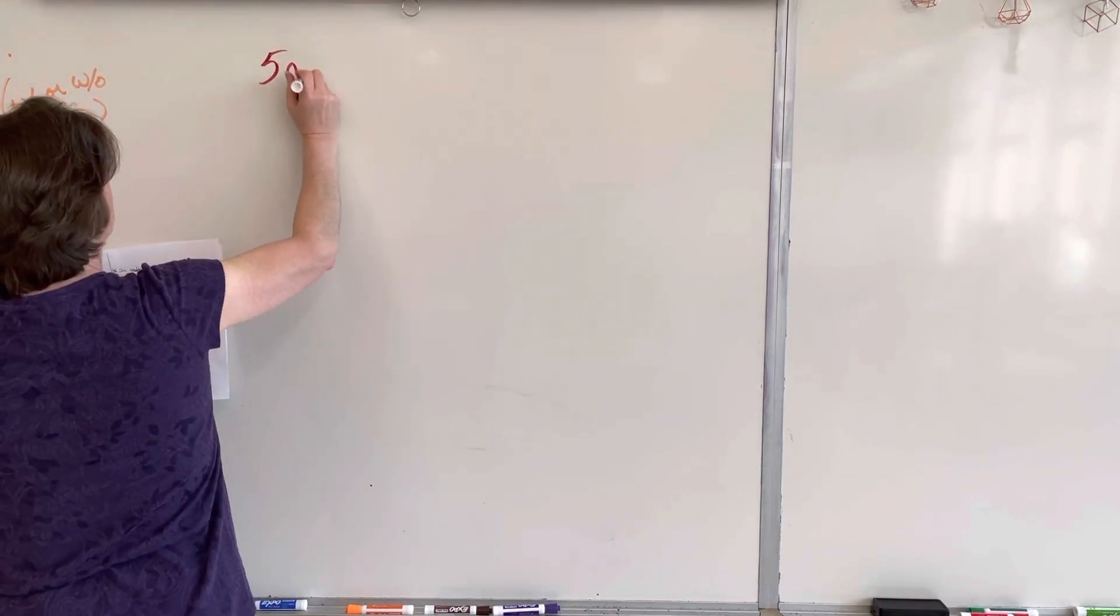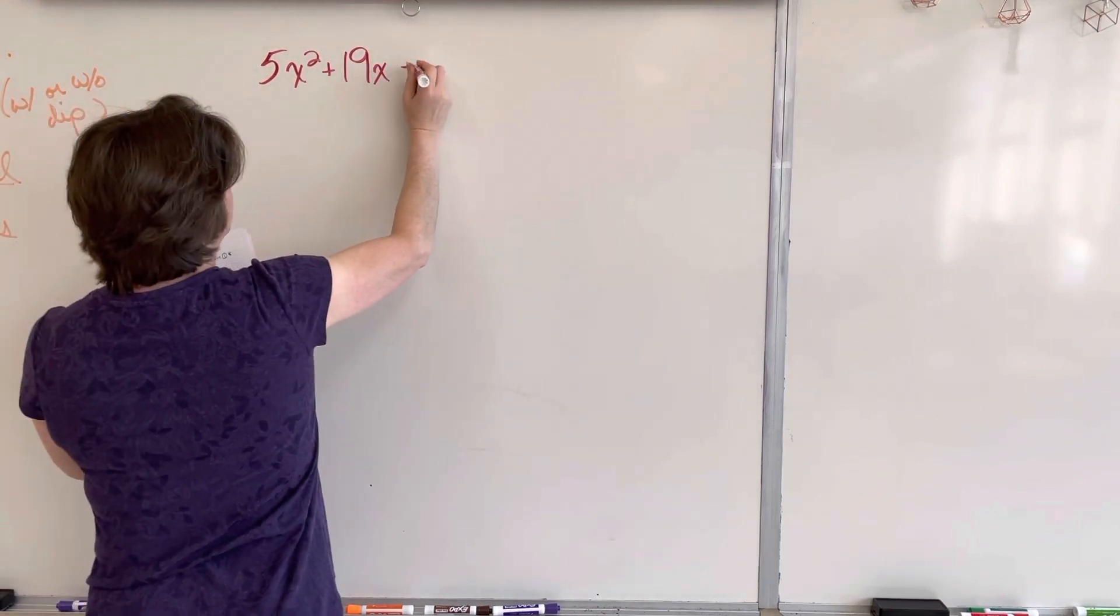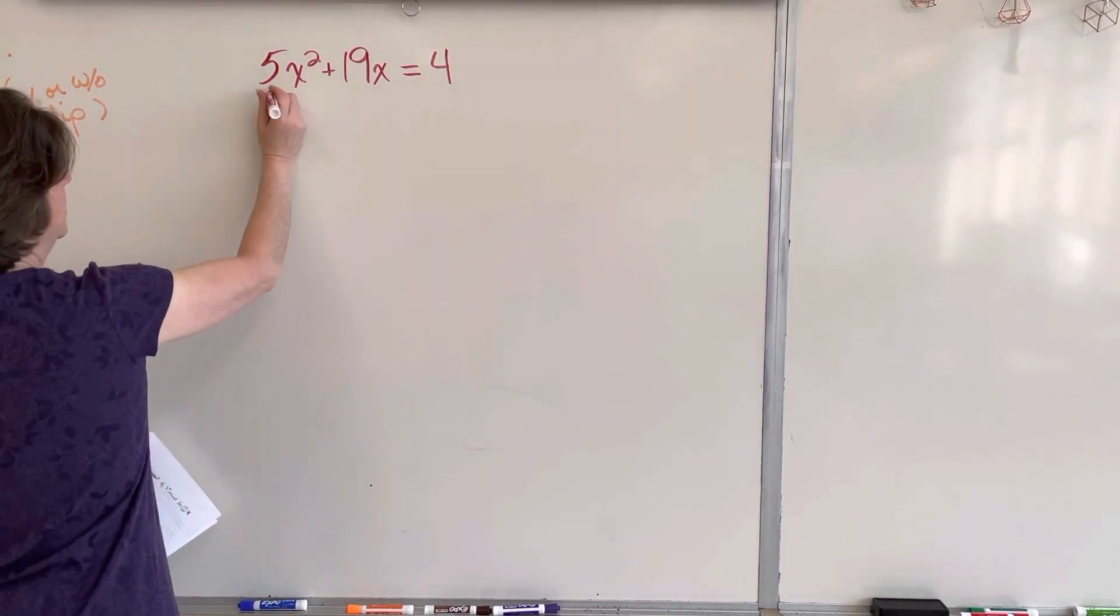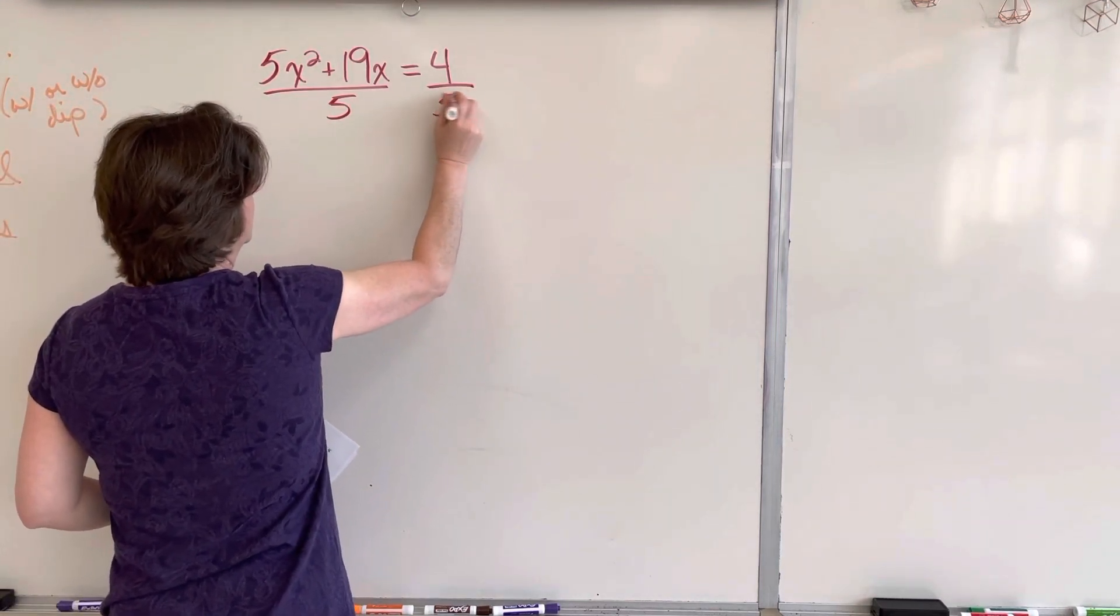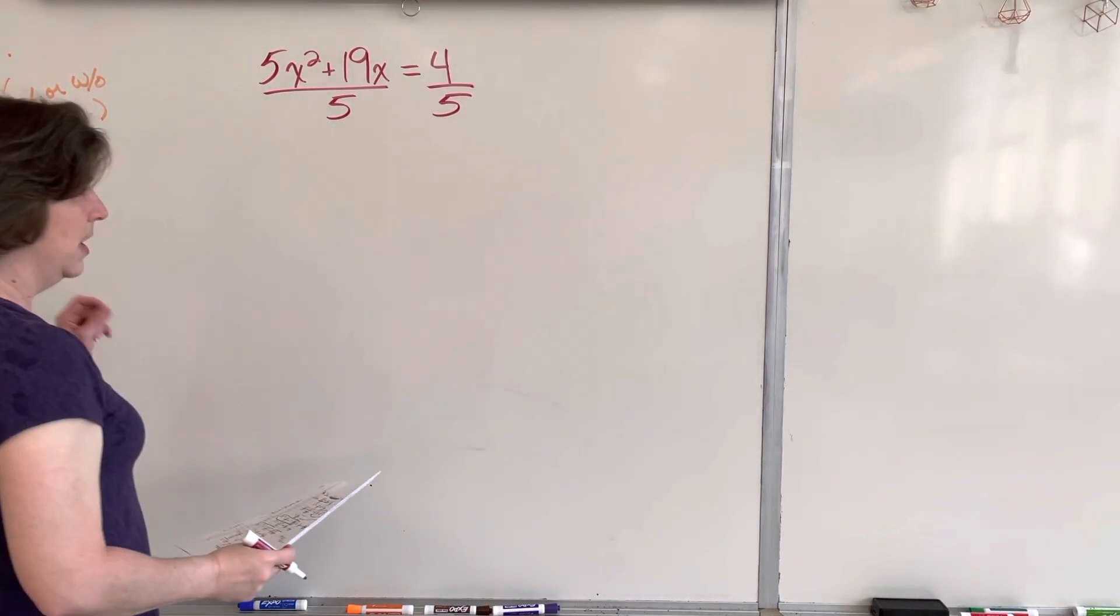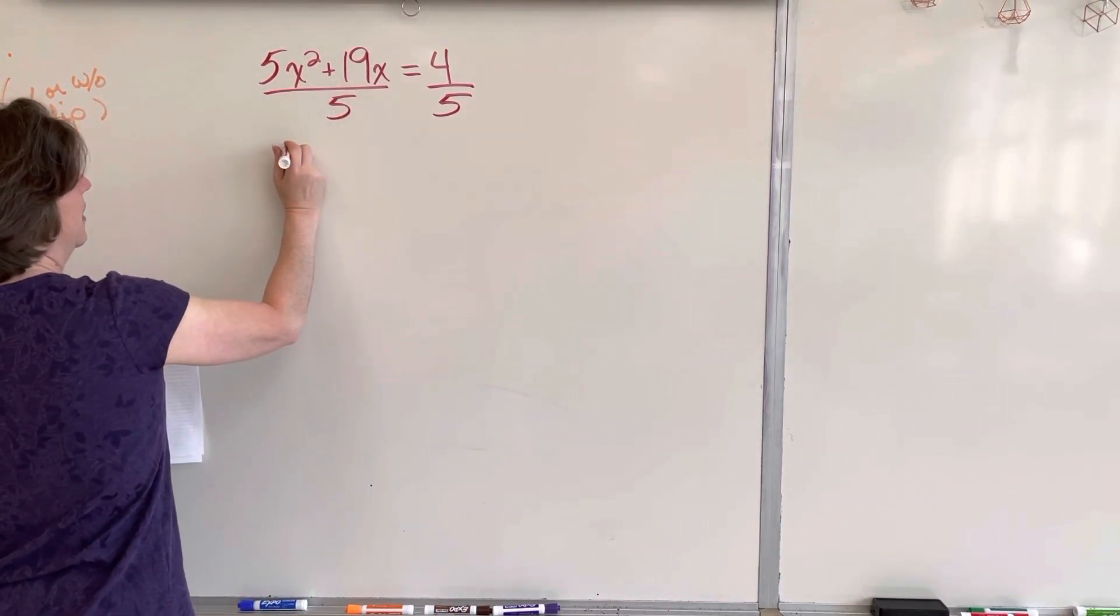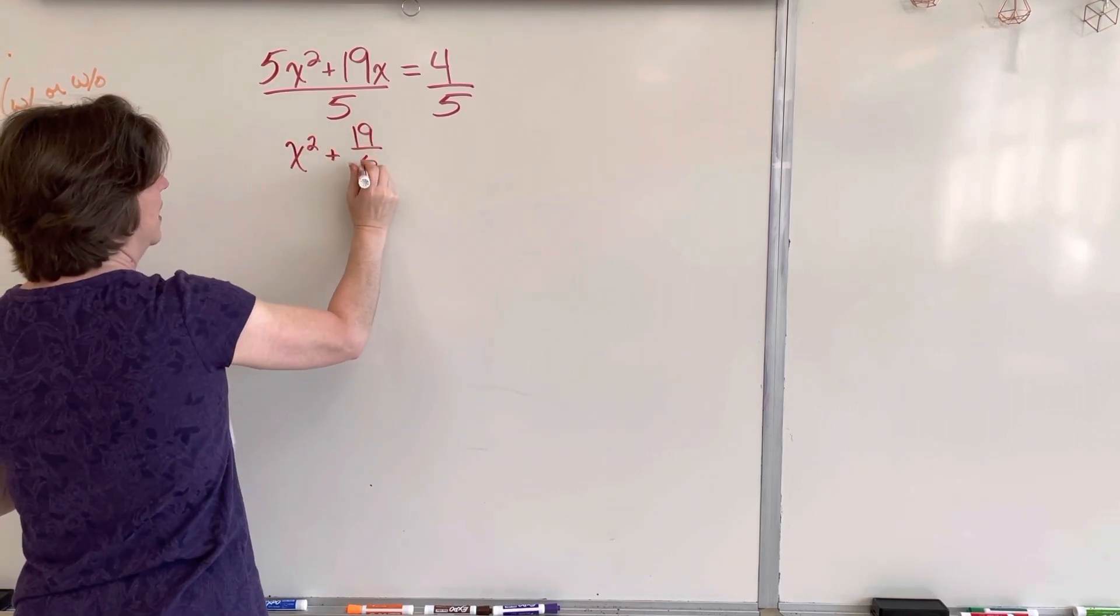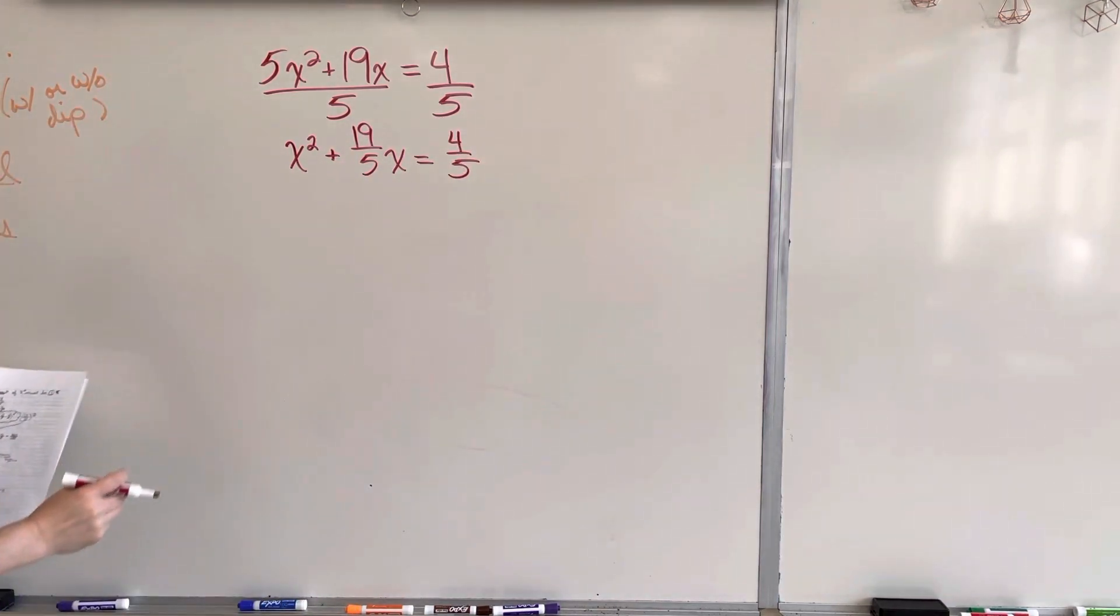5x squared plus 19x equals 4. It's already got the c on the right-hand side, so that's good. But we've got this 5, and we don't want a 5. We want a 1. So I have to divide that by 5. Remember, in algebra, we use fractions. We do not use decimals. You are not changing anything into decimals. We have to distribute, divide by 5. That leaves me with x squared plus 19 over 5x equals 4 fifths.